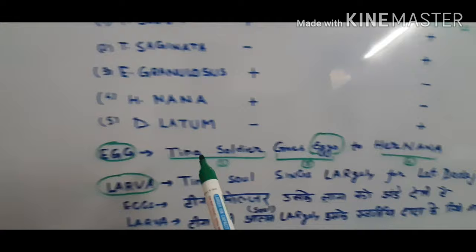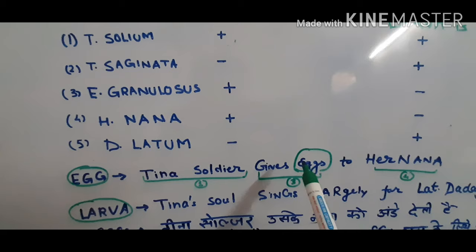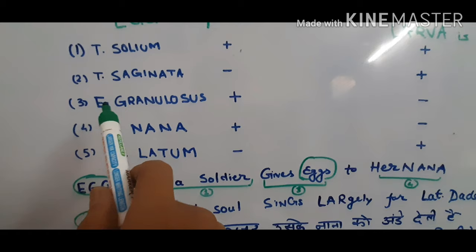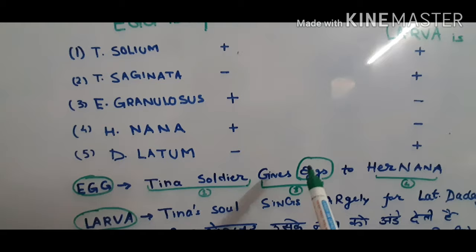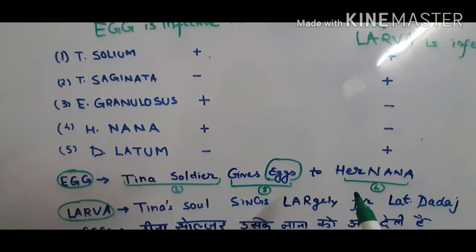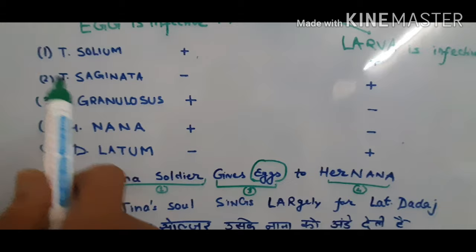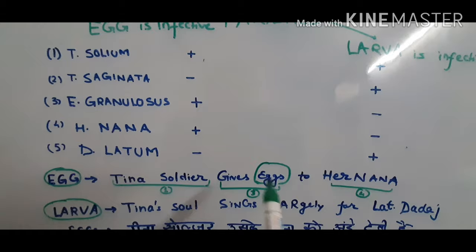So the mnemonic reads: 'Taenia solium gives eggs to her Nana.' Taenia solium is first. Then 'gives eggs' — read E for Echinococcus and 'gives' for granulosus — so Echinococcus granulosus is third. Then 'to her' — H-E-R — H stands for H. Nana, which is the fourth parasite. So first, third, and fourth parasites have egg as infective stage: Taenia solium, Echinococcus granulosus, and H. Nana.